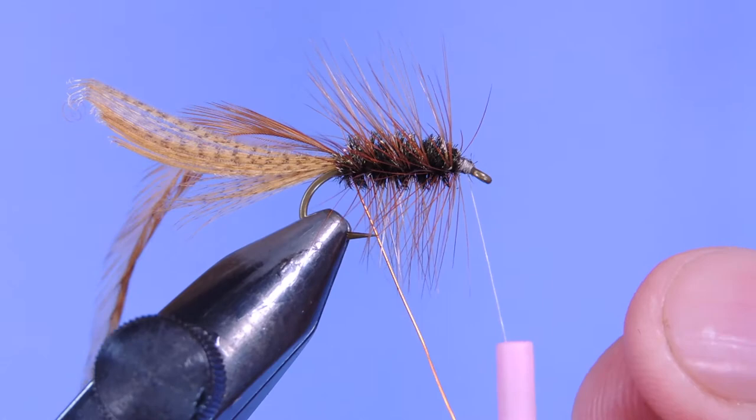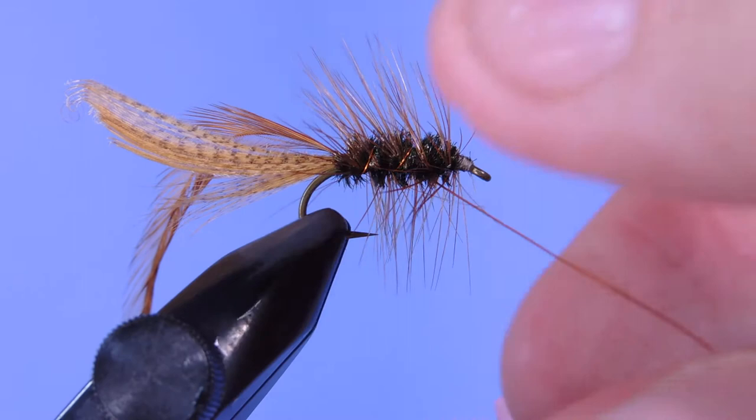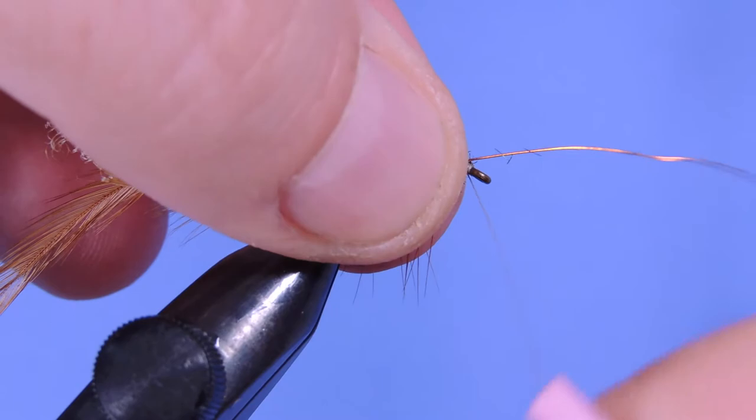It's about 5 wraps back is cool. And we're going to take our wire, we're going to catch that and then wrap forward up to the head. Pull everything back.